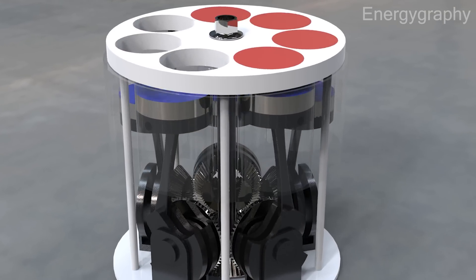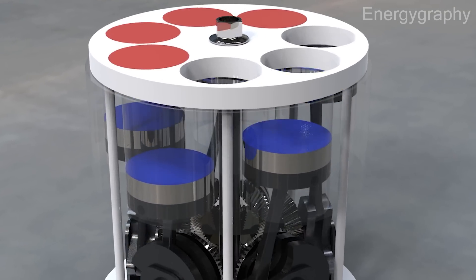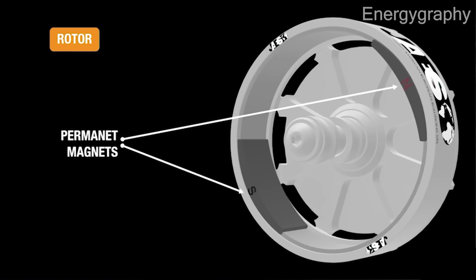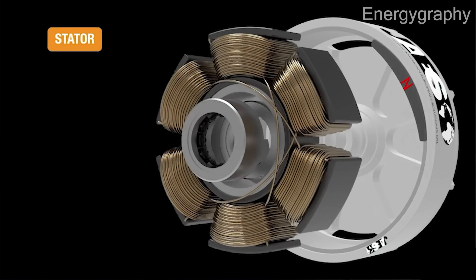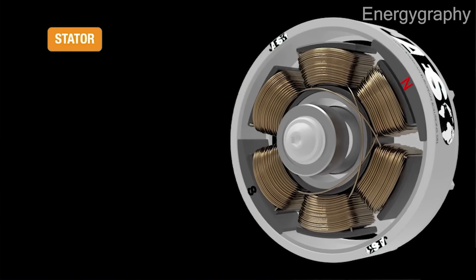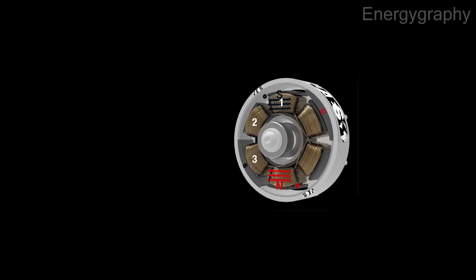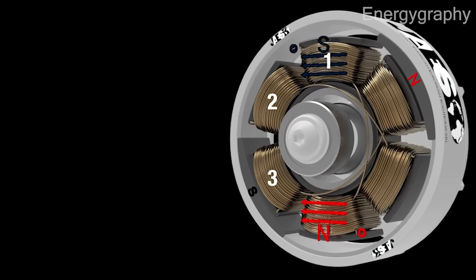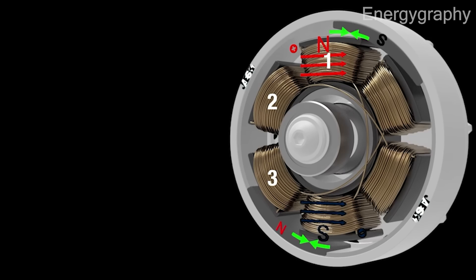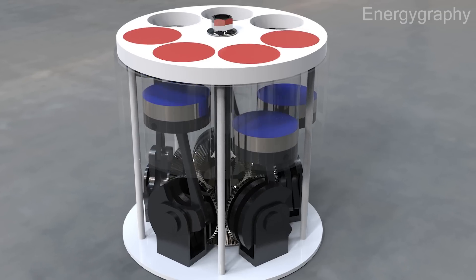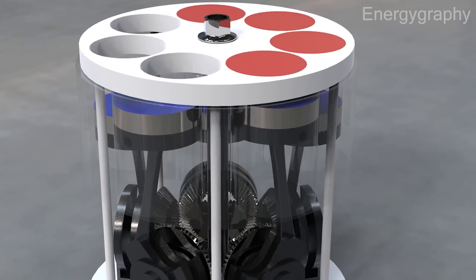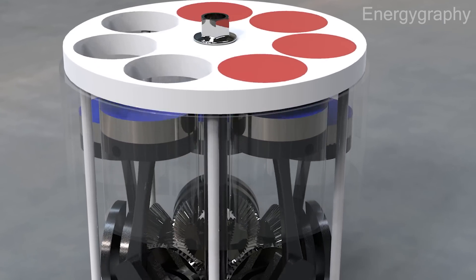The permanent magnet engine operates using a mechanism similar to that of electric DC motors that utilize both electricity and permanent magnets. However, the main difference lies in how the magnetic poles are switched. In electric permanent magnet motors, the direction of the poles is changed through the use of brushes or electric circuits. In contrast, the new permanent magnet engine operates without the need for external electricity and uses a mechanical mechanism for pole switching.